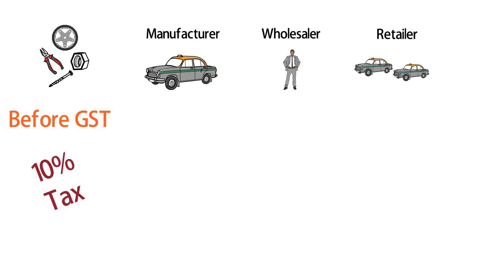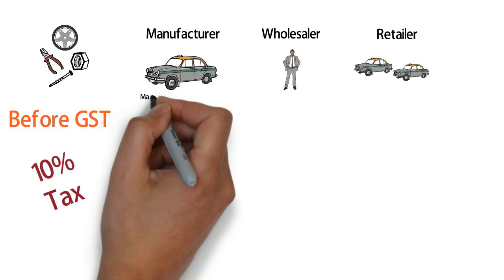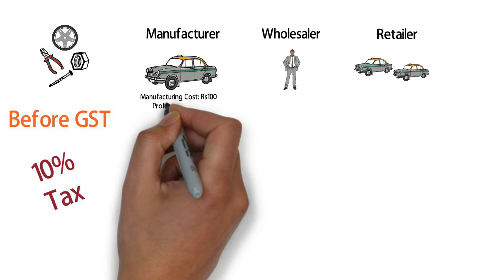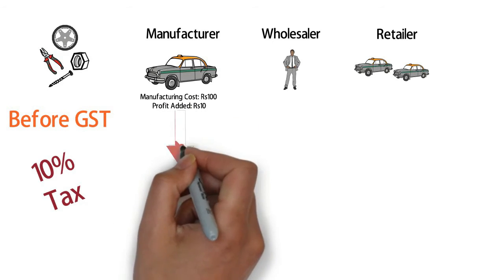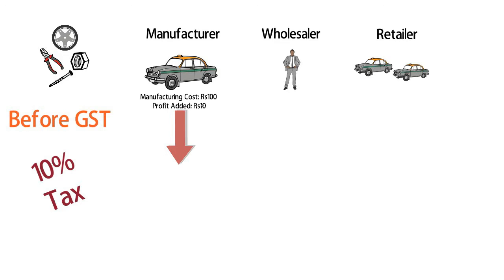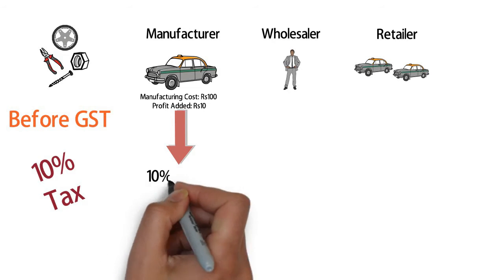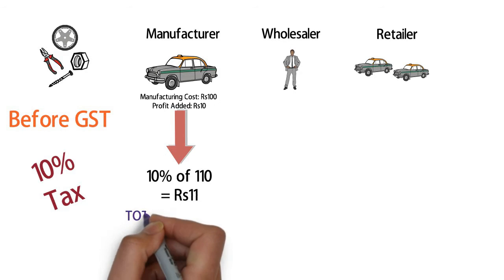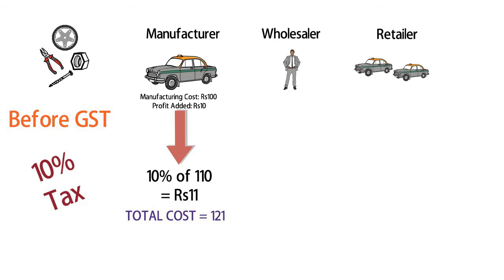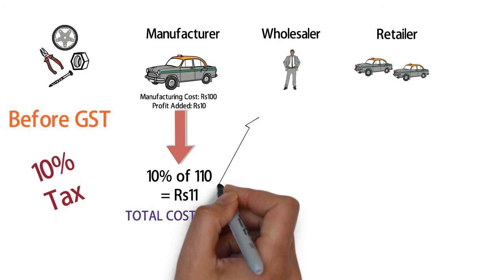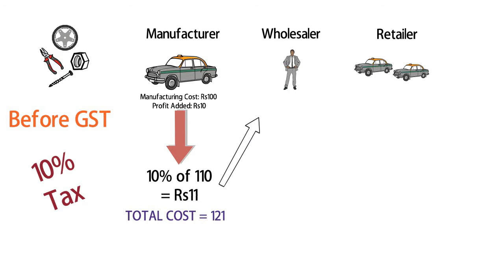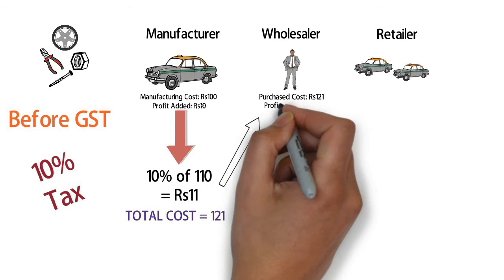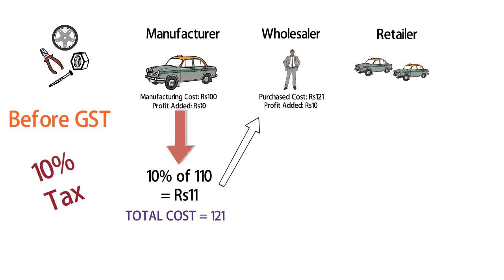For easy understanding, let us assume there is a flat 10% tax at each level. The manufacturer makes a car with 100 rupees and adds a profit of 10 rupees, so manufacturing cost plus profit equals 110 rupees. He then pays a tax of 10% on 110 rupees, which is 11 rupees, so the final price of the car becomes 121 rupees.